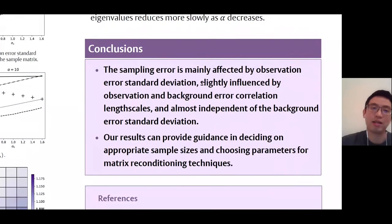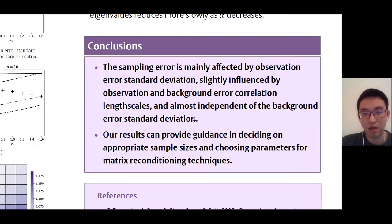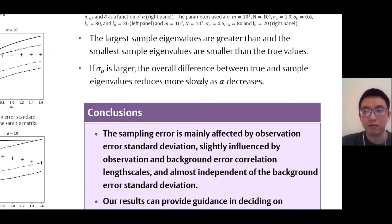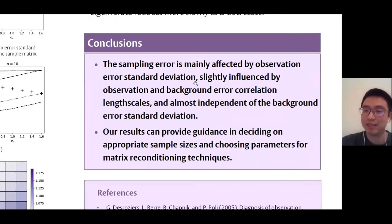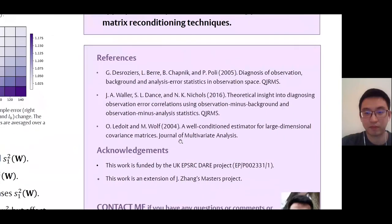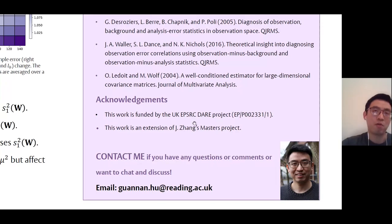Our main conclusions are that the sampling error is mainly affected by observation error standard deviation, slightly influenced by observation and background error correlation length scales, and almost independent of the background error standard deviation. Our results can provide guidance in deciding on appropriate sample sizes and choosing parameters for matrix reconditioning techniques. Please do contact me if you have any questions or comments — we are really looking for inputs and will be glad to hear from you. Thank you.